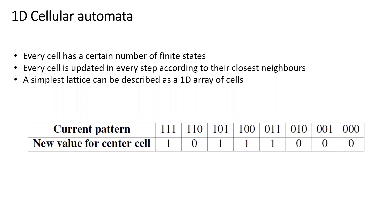If we have one-dimensional cellular automata, how many neighbors do we have? On a one-dimensional line, we have two neighbors. It's myself and two of my neighbors — three elements to consider to update each cell at each time step. And if I have two finite states, like living or dead, one or zero for each state, these cellular automata problems, especially in 1D, can be identified by eight rules.